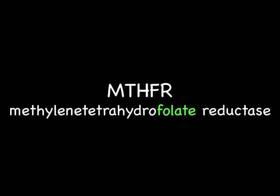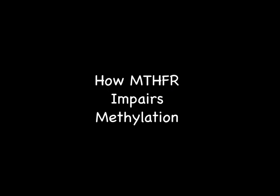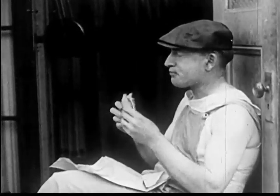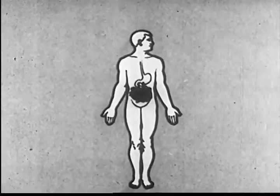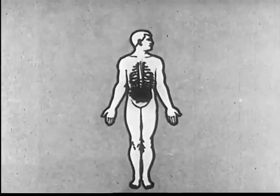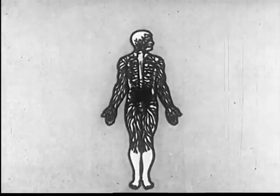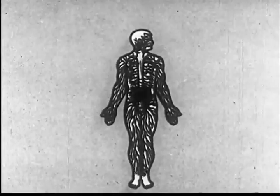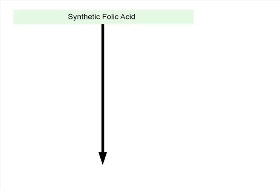The body derives nutrients from food. The nutrients go through a series of conversions until they become an active form which can be utilized by the body. Enzymes help with the conversions. Let's look at folic acid and B12, which are especially important for methylation. Synthetic folic acid is added to many foods and vitamins.